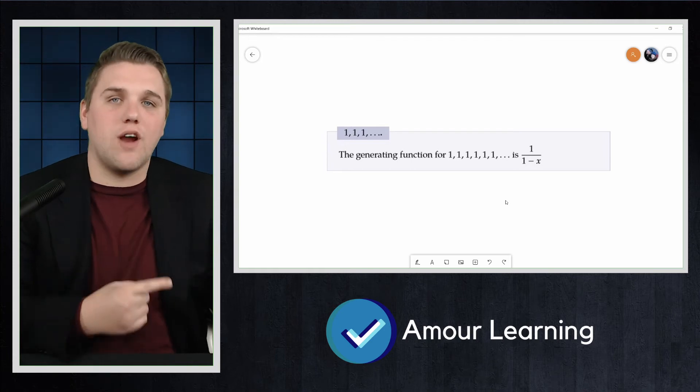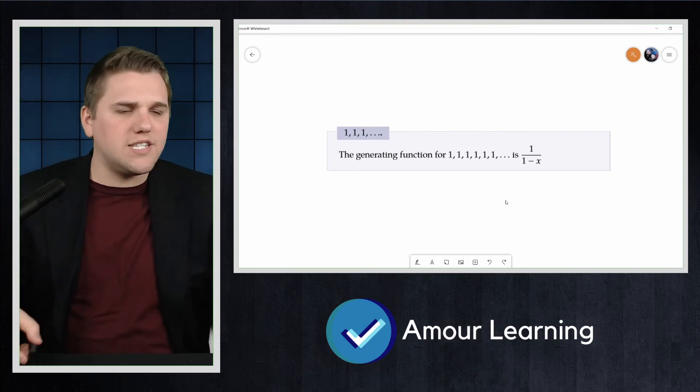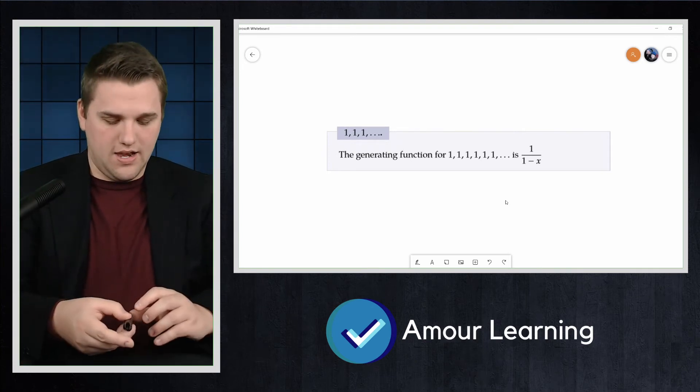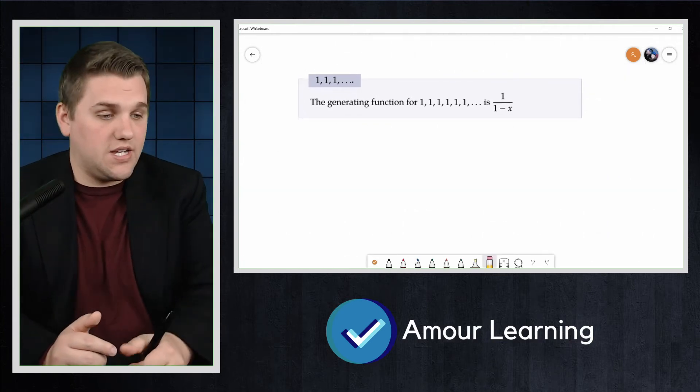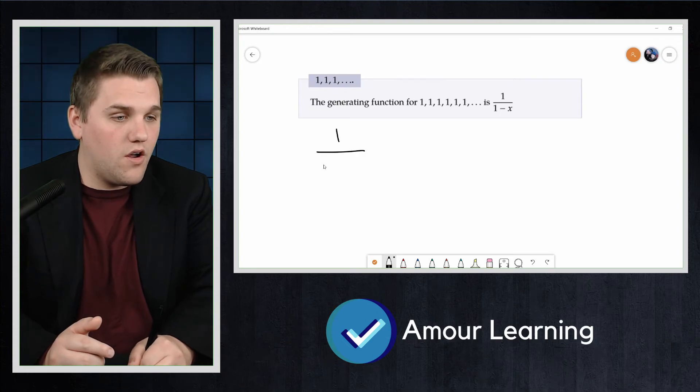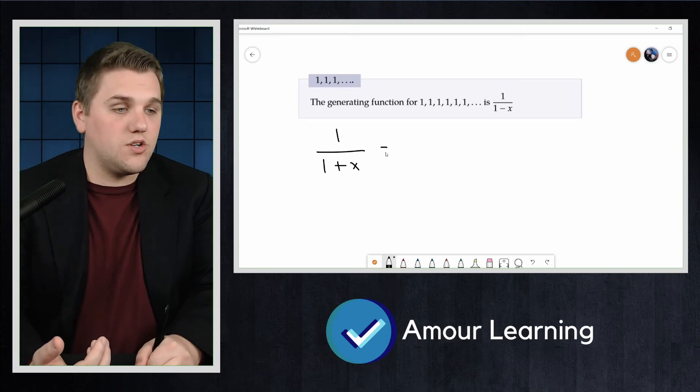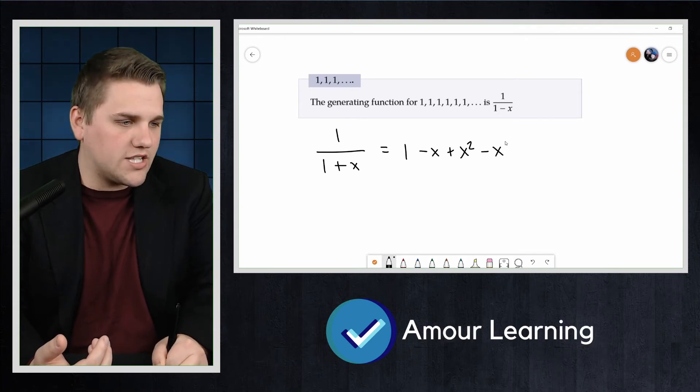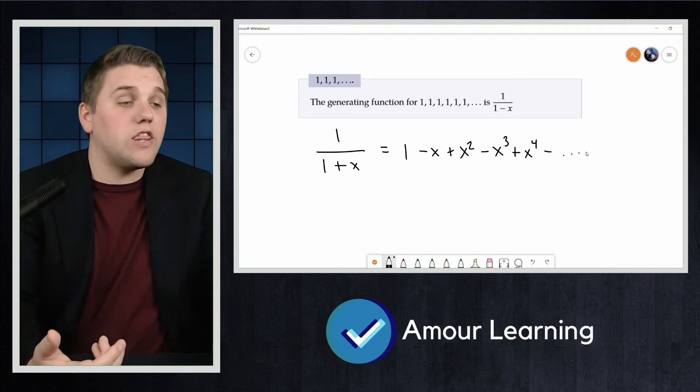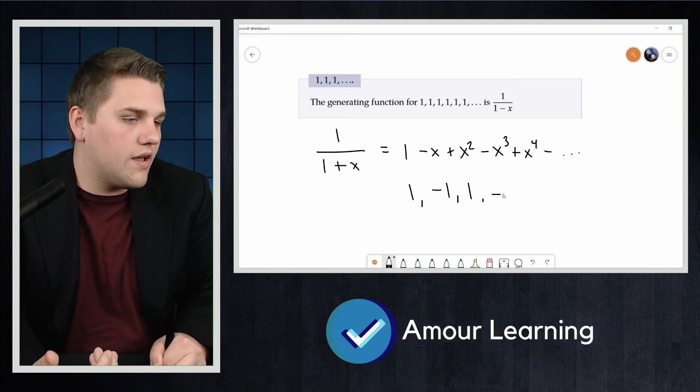Let's use this basic generating function to find generating functions for more sequences. What if we replace x by negative x? Well, we would get 1/(1+x) = 1 - x + x^2 - x^3 + x^4 and so on, which generates the sequence 1, -1, 1, -1, 1, and so on.